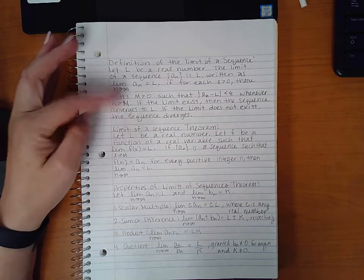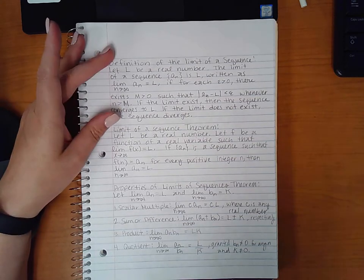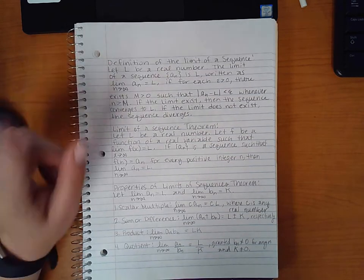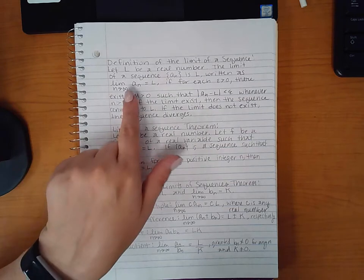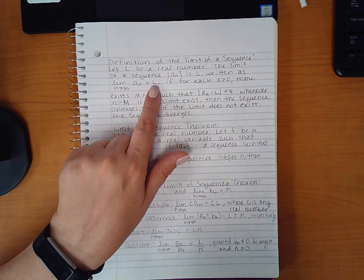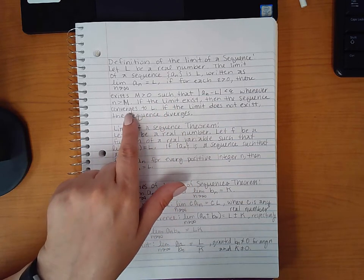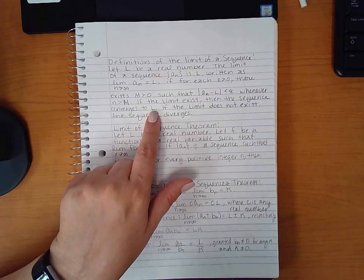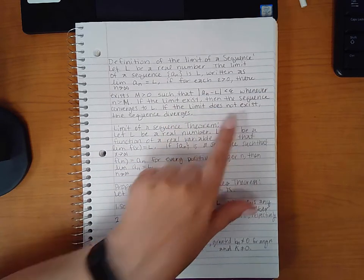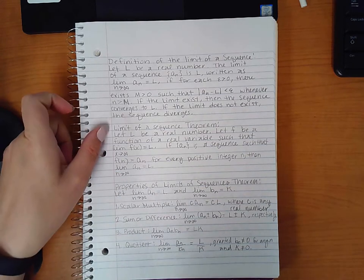So we're not going to have to do any epsilon-M proofs or anything like that in this section. This is just the formal definition of a limit. But what we need to pay special attention to is that if you take the limit of the nth term and you get a real number L, then the limit exists and the sequence converges to that number. If the limit does not exist, the sequence diverges. That's what we need to pick from that definition.